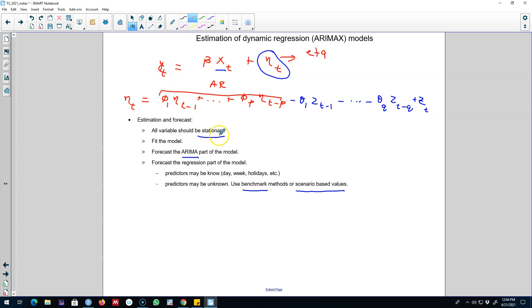And again, before doing anything, you have to make sure that all of your variables are stationary. Your y-t variable is stationary and x-t variable is stationary. You can fit the model and then forecast the ARIMA part and the regression part separately. And for the regression part, you need future x-t values. And you can either use the benchmark methods or use scenario-based forecasts to forecast these x-t values first and then use those x-t values to forecast our variable of interest y-t.